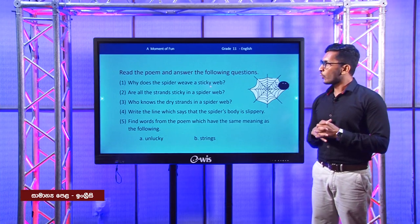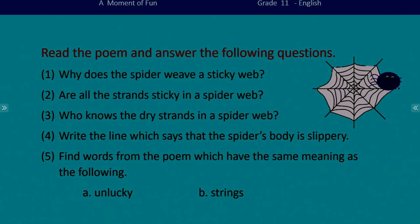Question one: why does the spider weave a sticky web? Now I want you to take your notebook and copy down these questions. Second: are all the strands sticky in a spider web? Third: who knows the dry strands in a spider web? Question four: write the line which says that the spider's body is slippery. Number five: find words from the poem which have the same meaning as (a) unlucky, (b) string.